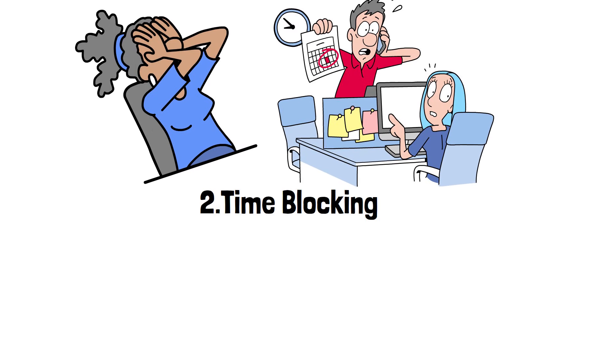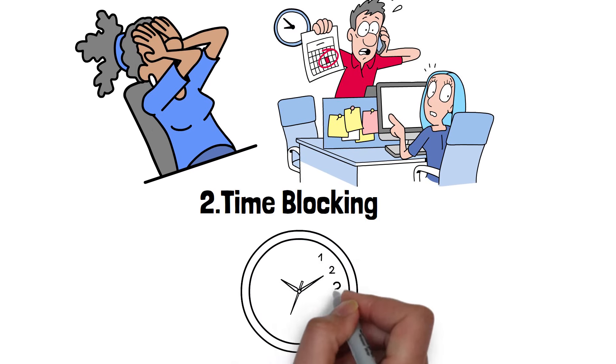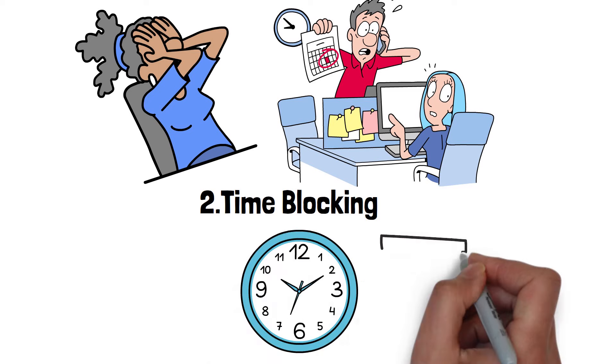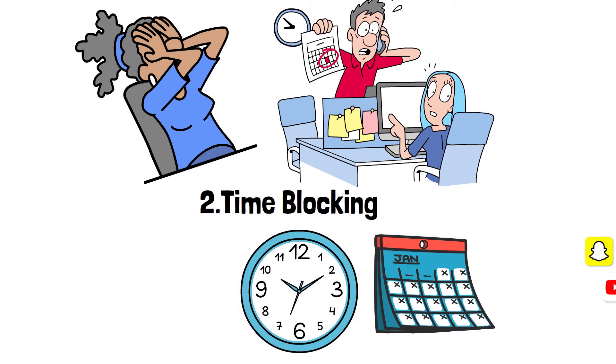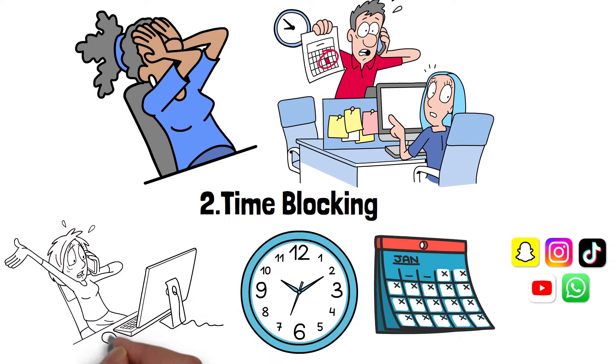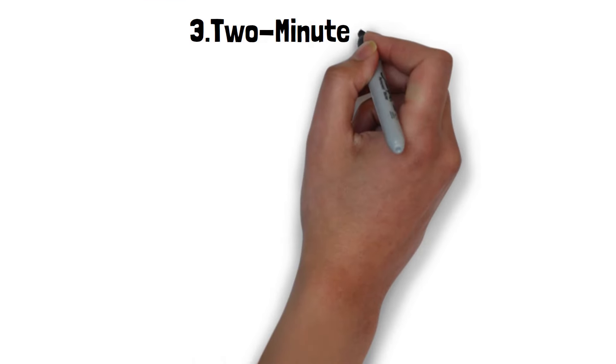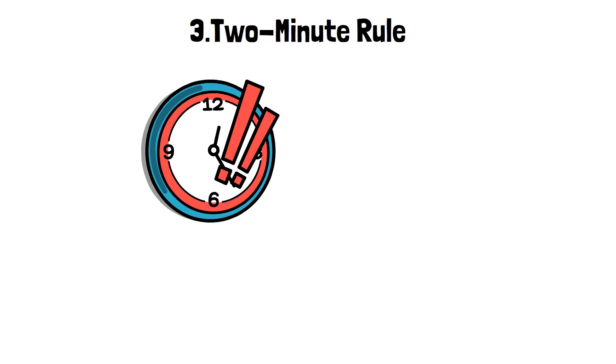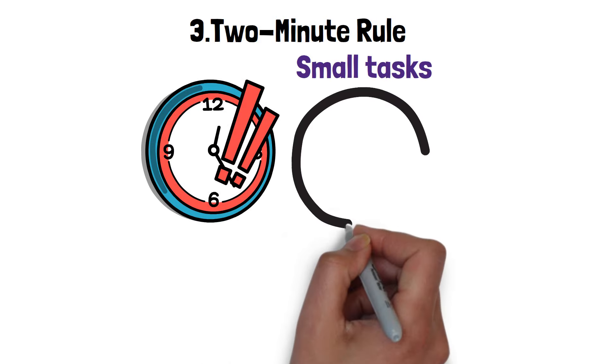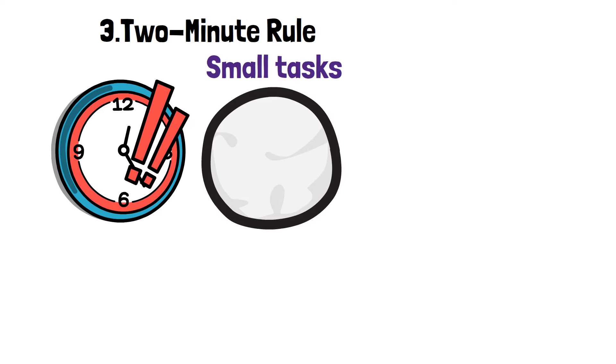Number 3. Two-minute rule. If a task takes less than two minutes to complete, do it immediately. This simple rule helps prevent small tasks from snowballing into larger ones. Number 4. Pomodoro technique. Work in focused intervals, typically 25 minutes, followed by a short break. Repeat this cycle to maintain productivity while allowing for regular rest.